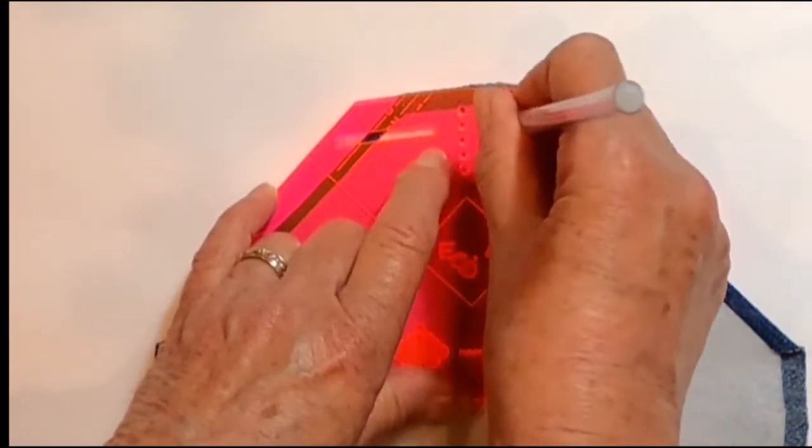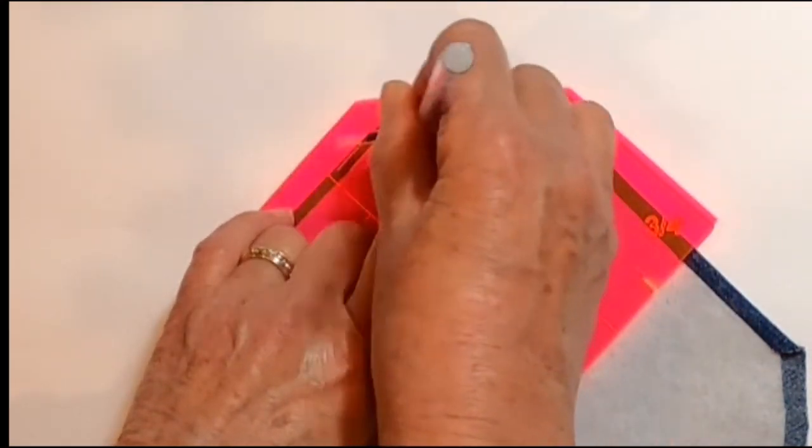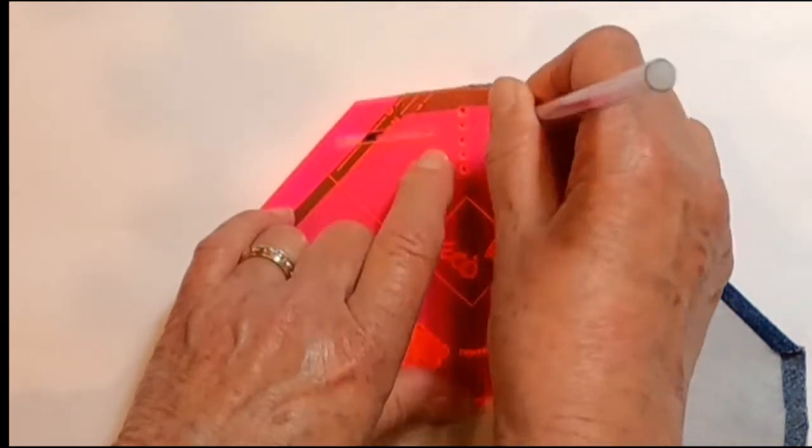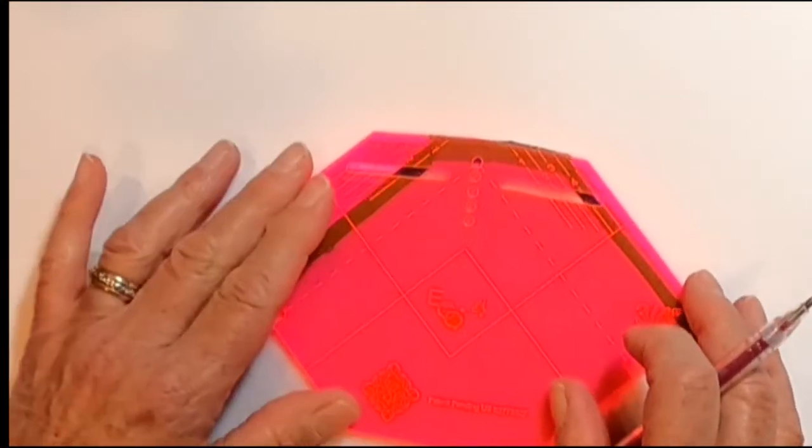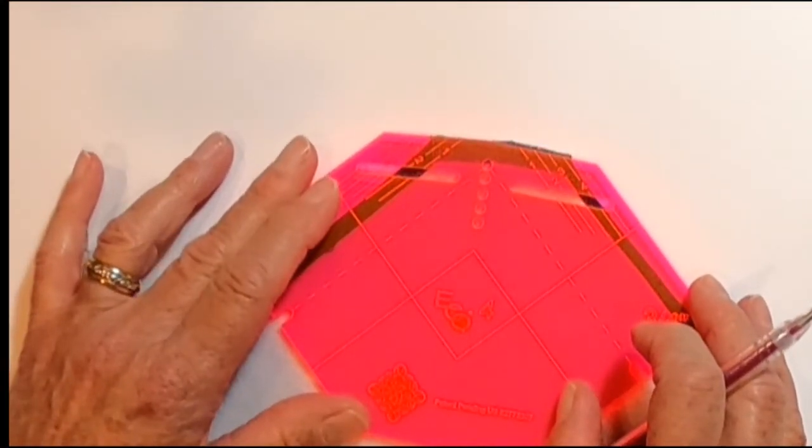I also mark these lines because they give me a good indication of where to place double-sided quarter-inch washable basting tape if I have to use it when I'm turning under the edges.